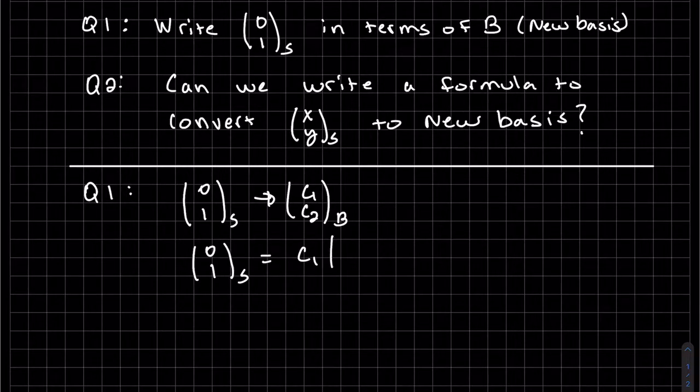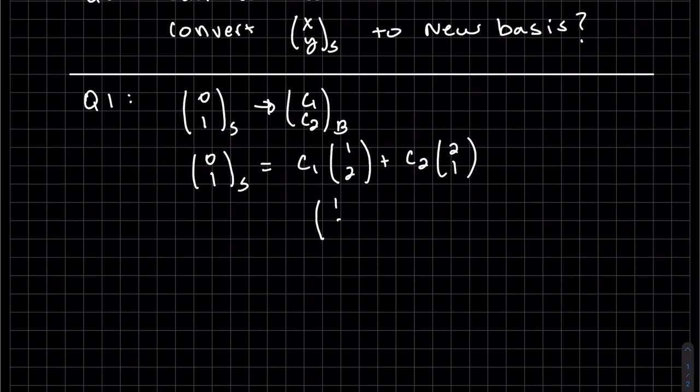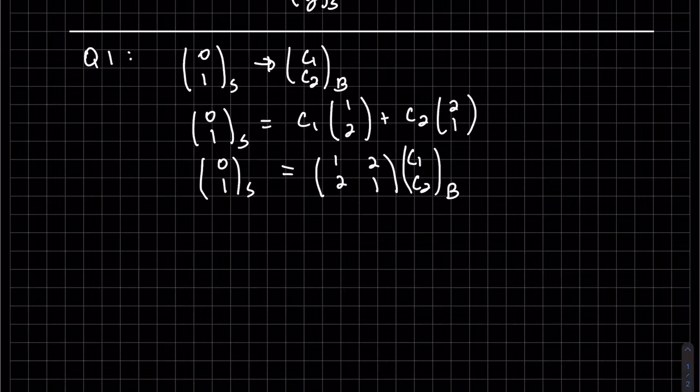We write it as a linear combination of our new bases: (1, 2) and (2, 1). And that will be my new bases. So to solve for that new bases, we do know that these are linearly independent because it's given to be a bases. So we can just take the inverse of both sides.